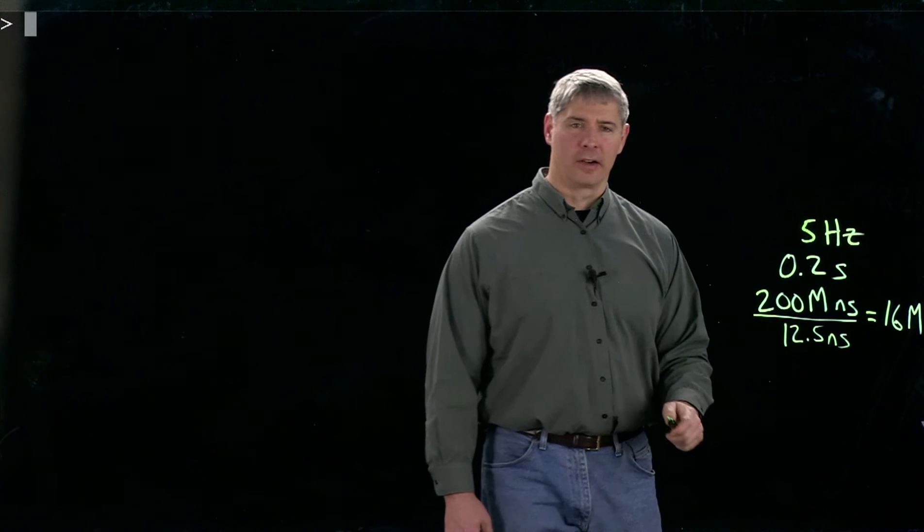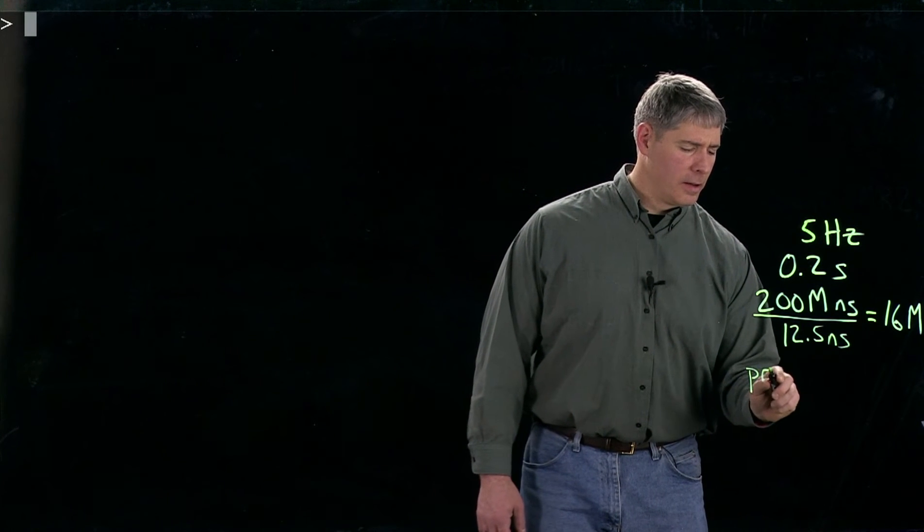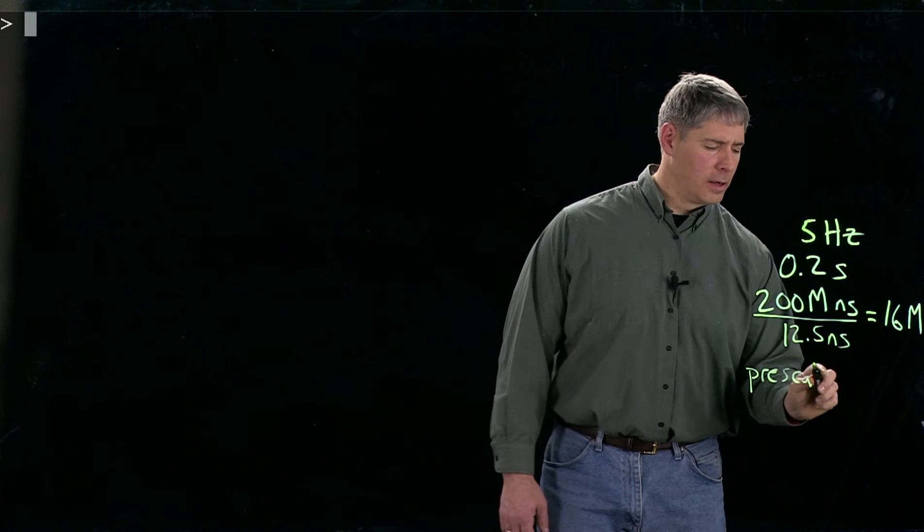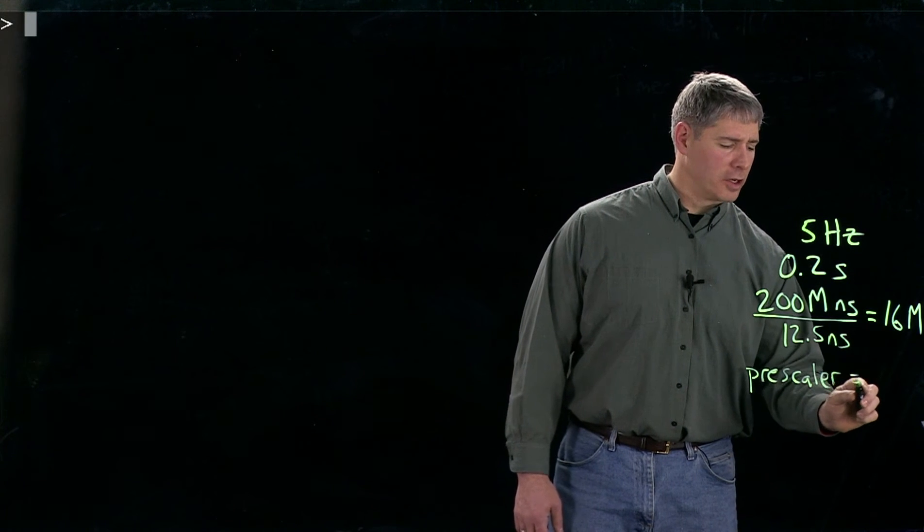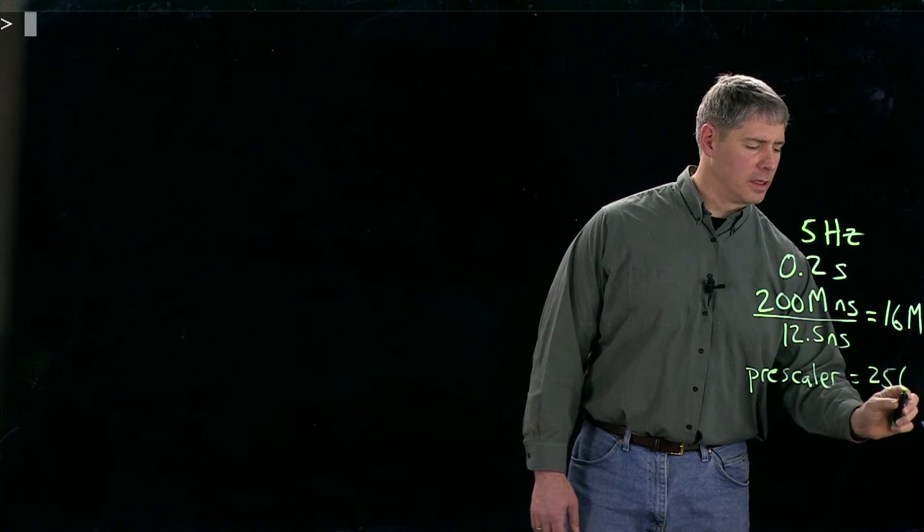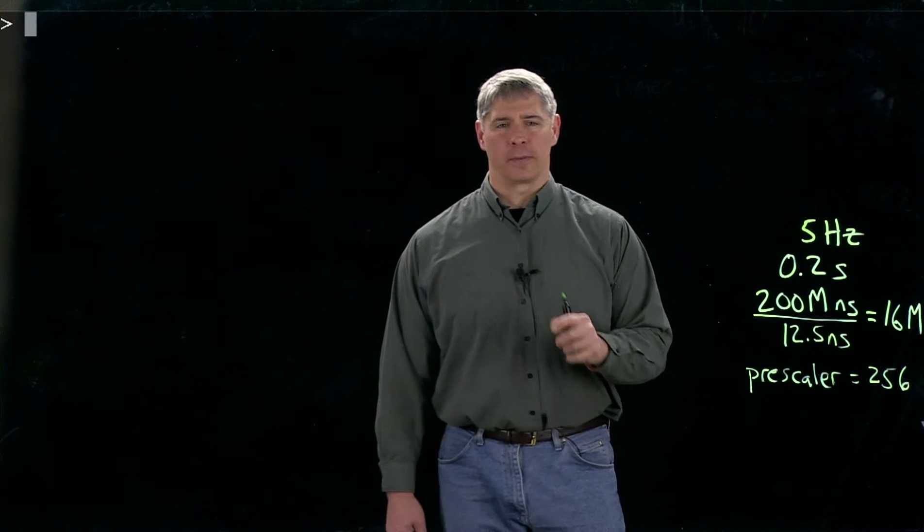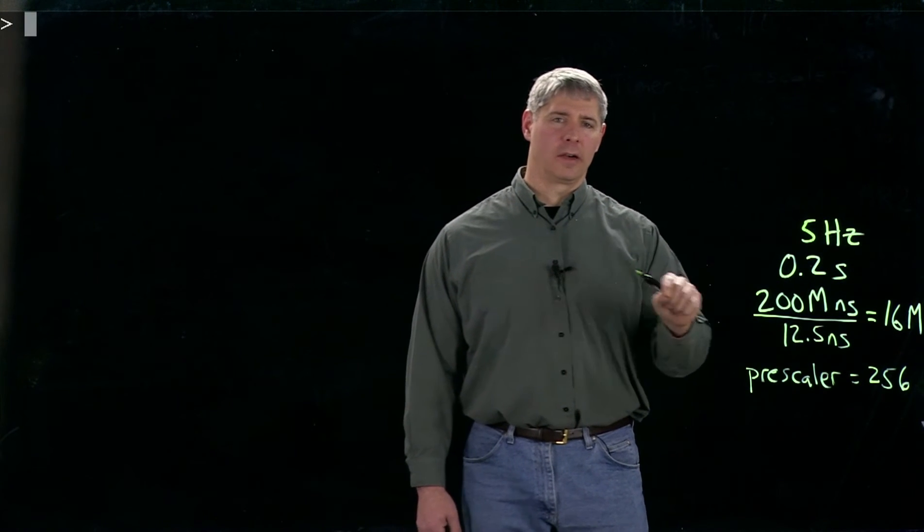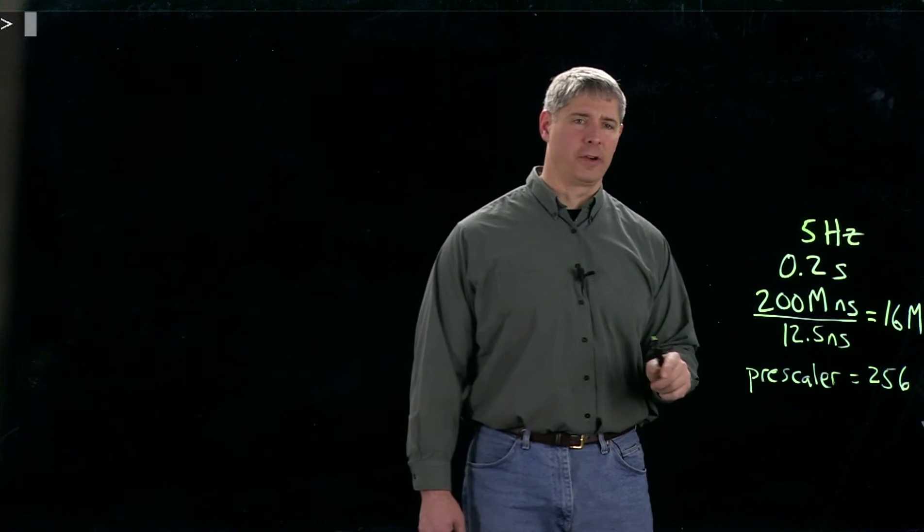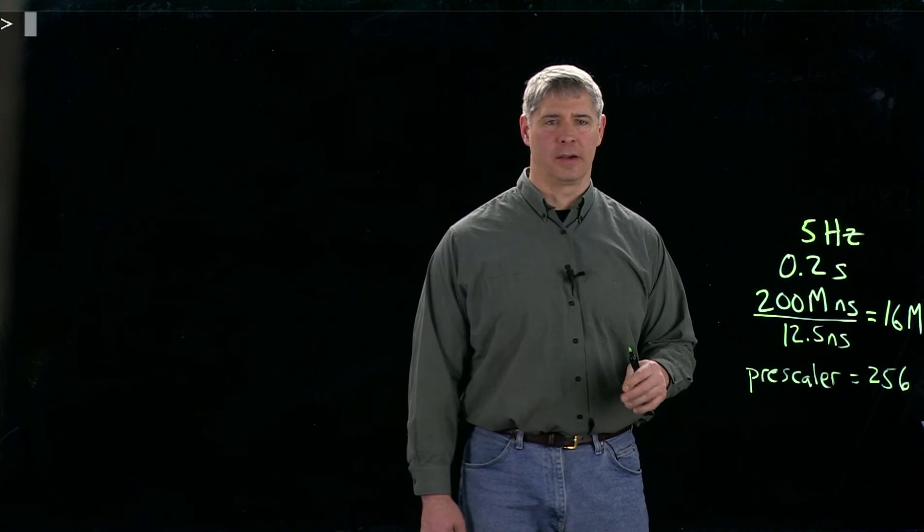choose a pre-scaler of 256, and this is going to be a good choice that we'll see in a moment. Then that means the pre-scaler is only going to create one pulse to the counter every 256 peripheral bus clock